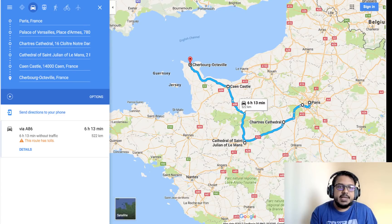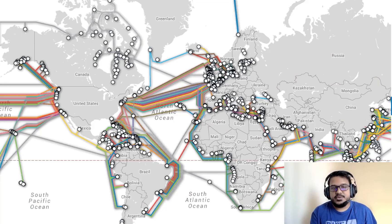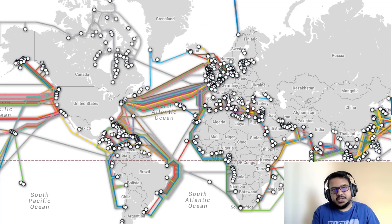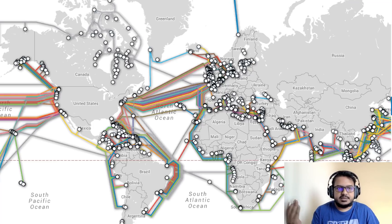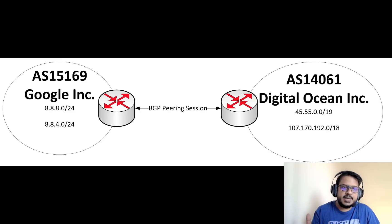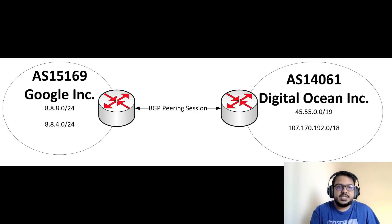BGP you can imagine as a bunch of people making and updating maps that show you how to get to your destination website — in this case, how to get to Facebook. When it comes to BGP, the internet is broken into big networks known as autonomous systems. You can imagine them as island nations — networks controlled by a single entity, which could be an internet service provider like Comcast, a company like Facebook, or even major universities or governments.